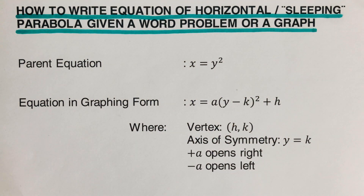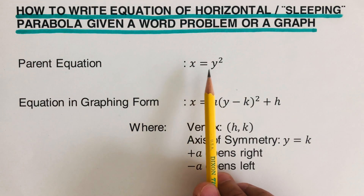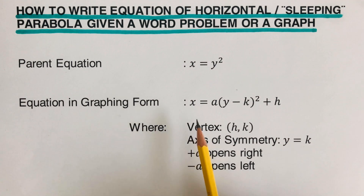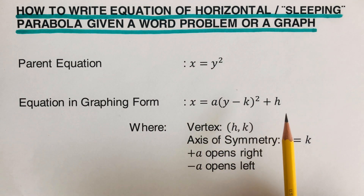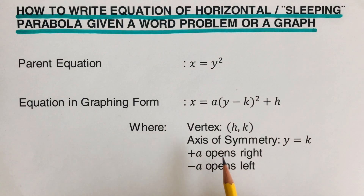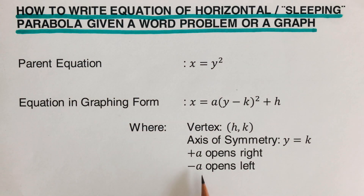Now let's have a review on the basics of horizontal parabola. The parent equation of a horizontal parabola is x equals y squared. The equation in graphing form is x equals a(y minus k) squared plus h, where (h, k) is our vertex and the equation of the axis of symmetry is y equals k. If a is positive, the horizontal parabola opens right. When a is negative, the horizontal parabola opens left.